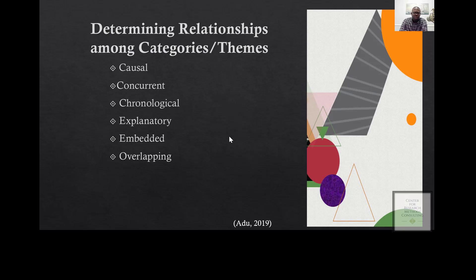The first one is the causal relationship. You ask yourself, based on what you know about the themes, does any theme cause another? This is not statistics where you find out whether there is a significant causal relationship between variables. Here, the causal relationship means: can this one inform the other? Does this theme affect the other theme?